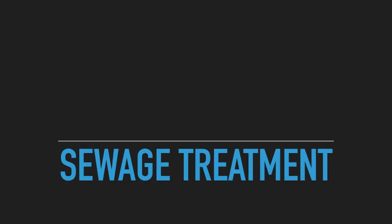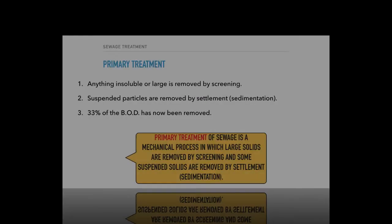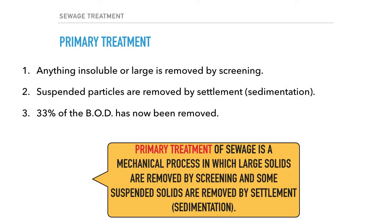It is important that you do not confuse sewerage treatment with water treatment — they are two completely separate areas. Primary treatment removes large and soluble objects by screening, using a wire mesh. Smaller suspended substances are then removed by sedimentation. 33% of the BOD is removed at this stage.